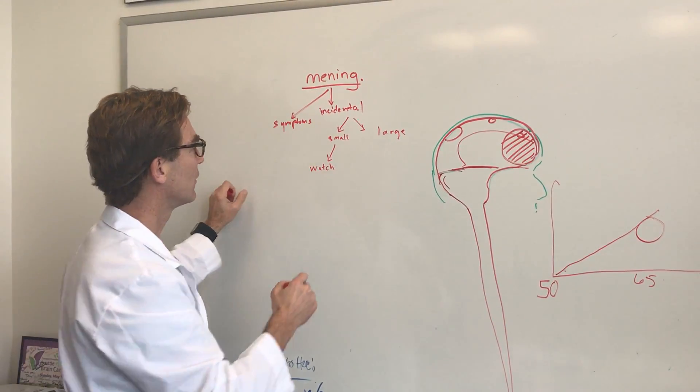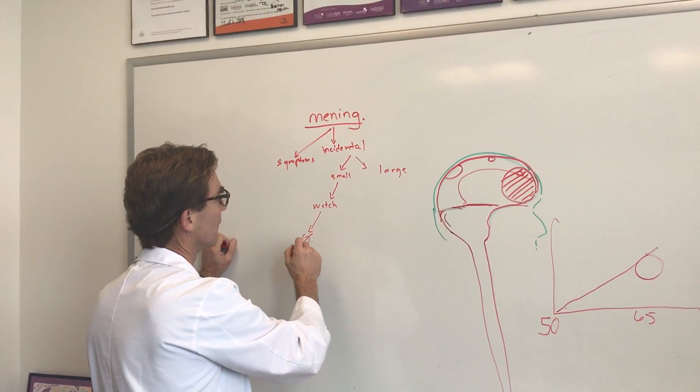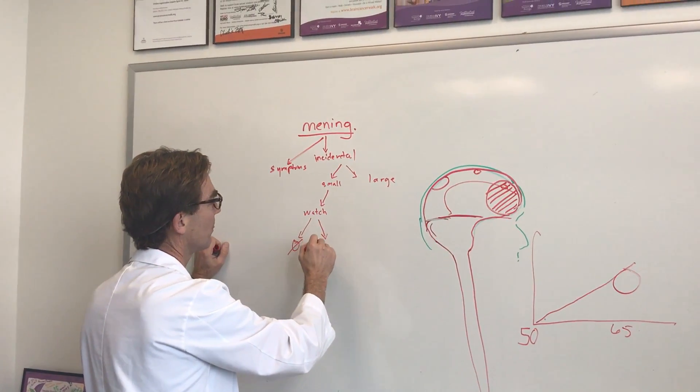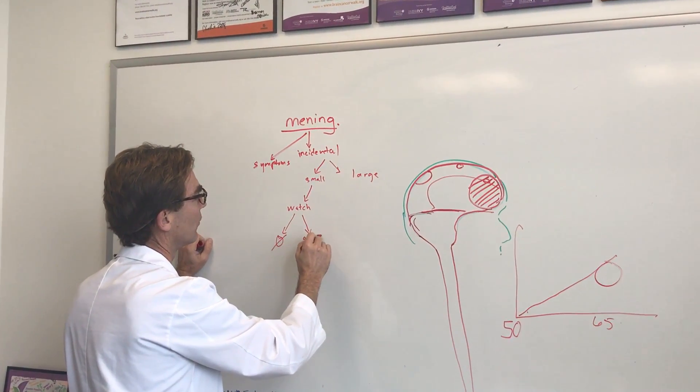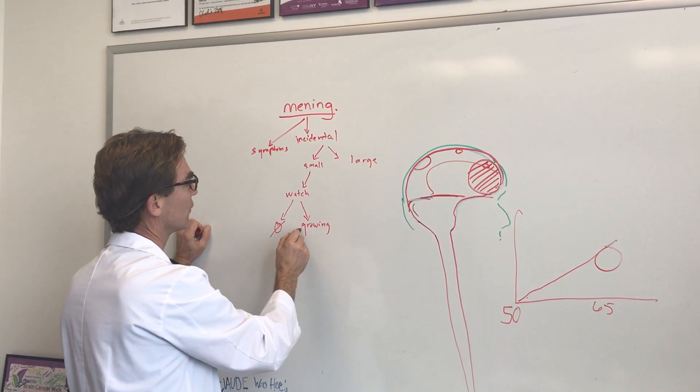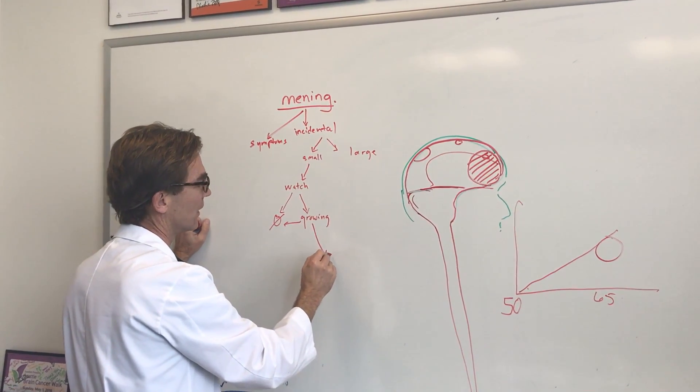In these small incidental meningiomas I like to watch them and just get an MRI maybe six months or a year later. If it's not growing you can do nothing, but if it's growing you can decide whether to do nothing or else take it out.